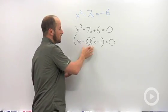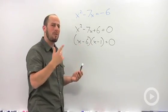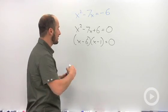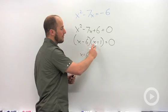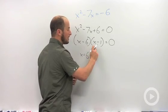What that tells us is we have two things multiplied equal to zero, so one of them has to be zero. So x either has to be 6, making this zero, or x has to be 1 to make this zero.